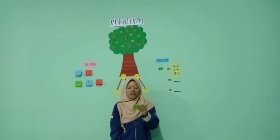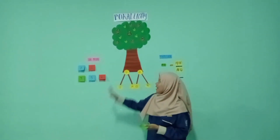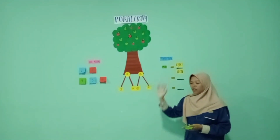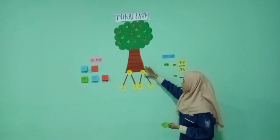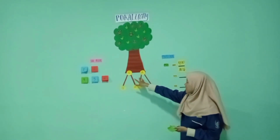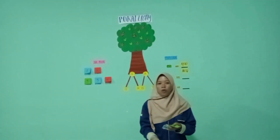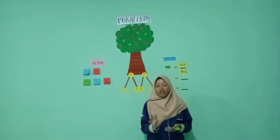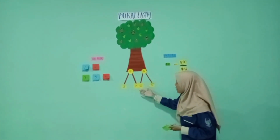Di sini soalnya: dua keping uang logam dilempar bersama-sama dalam satu kali. Peluang munculnya satu angka dan satu gambar adalah... Dalam soal telah diketahui bahwa dua keping uang logam itu dilempar dalam satu kali. Setiap satu keping uang logam menghasilkan angka atau gambar.